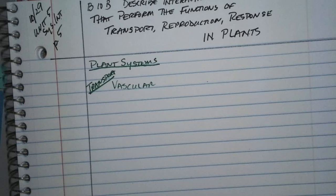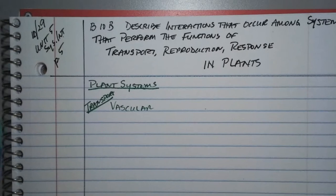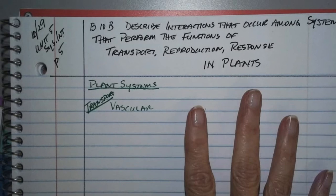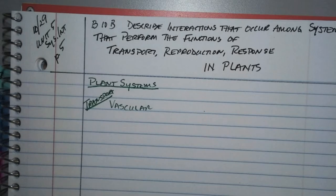Take a minute and set up your page. Pause this video and set up the page, and also write the TEAK out. The TEAK is B10B: describe interactions that occur among systems that perform the functions of transport, reproduction, and response in plants.